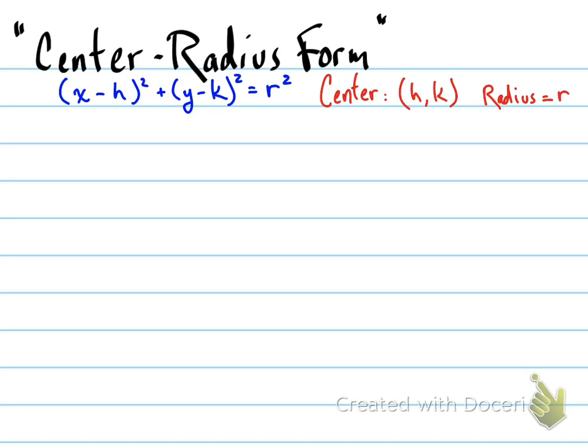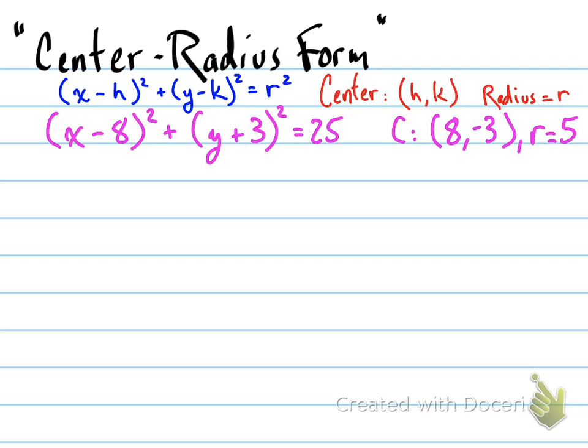All right, for example, if we had an equation x minus 8 squared plus y plus 3 squared equals 25, we would know that the center of the circle is at the point (8, -3) and the radius of the circle is the square root of 25, which is 5. There you go.